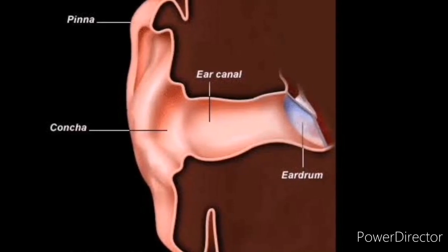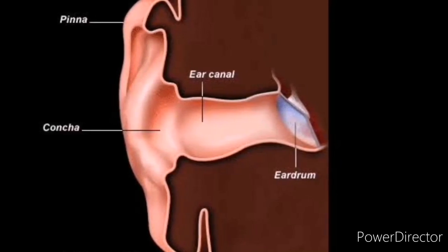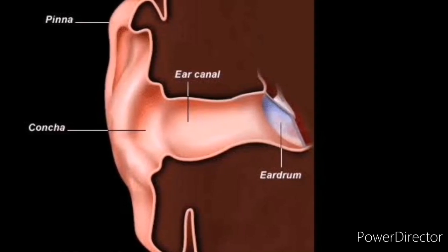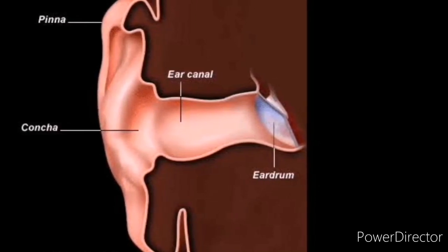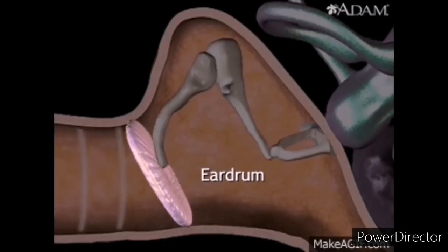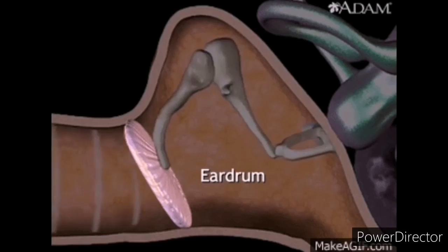The ear canal, or auditory canal. Once the sound waves have passed the pinna, they move 2-3 cm into the auditory canal before hitting the eardrum, also known as the tympanic membrane.